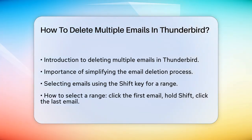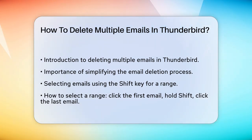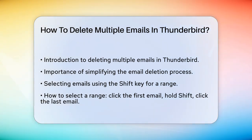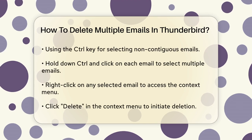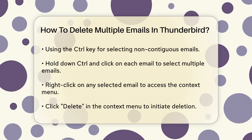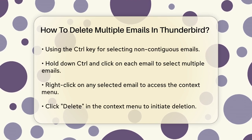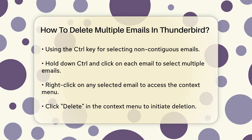First, you need to select the emails you want to delete. There are a couple of ways to do this. If you want to delete a range of emails, you can use the Shift key. Click on the first email you want to delete, then press and hold the Shift key and click on the last email in the range you want to delete. This will select all the emails between the first and the last one you clicked.